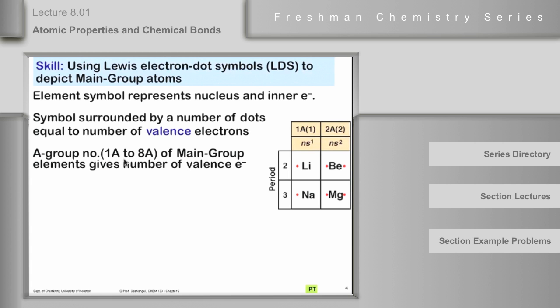First of all, in group A elements, 1A, 2A, then 3A to 8A, which is of course the main group, the group number gives the number of valence electrons. No big surprise there. Group 1A elements have one valence electron corresponding to an S1 configuration, group 2A, S2 configuration, and so forth.